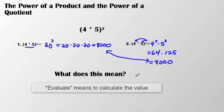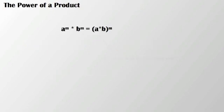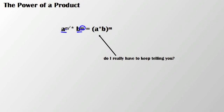Notice I used the word evaluate, and that's going to come into play here shortly. This leads us to our first rule: the power of a product. When you have two different bases with the same exponent, you can go ahead and combine those bases in parentheses, multiply them together, and then evaluate them using the exponent.